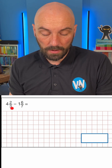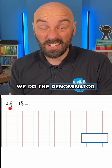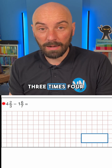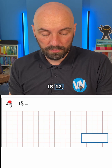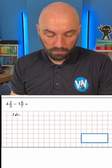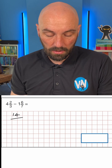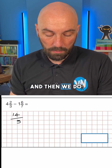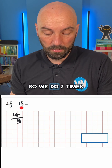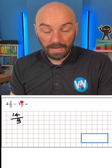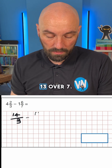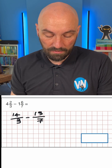To do that, we do the denominator times the whole number, then add the numerator. So we do three times four is 12, add two is 14 — giving us 14 over three. Then we do the same with the other fraction: seven times one is seven, add six is 13, giving us 13 over seven.